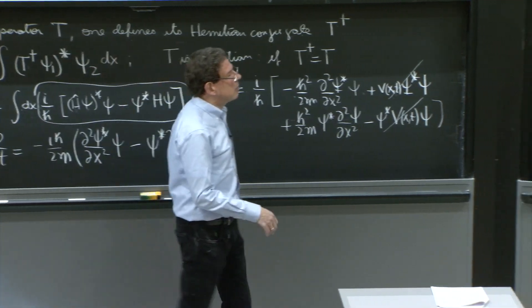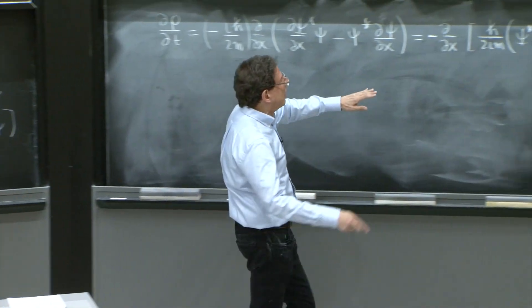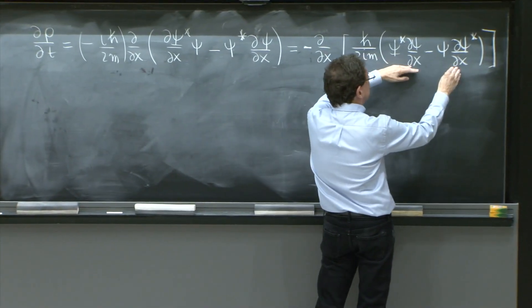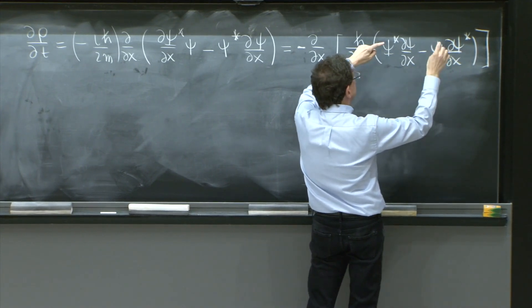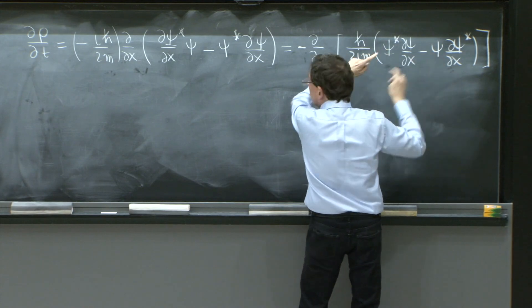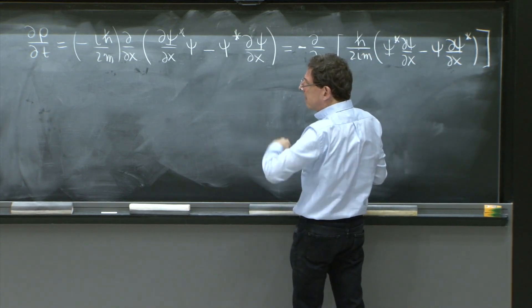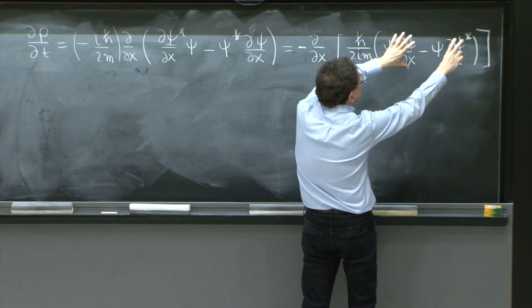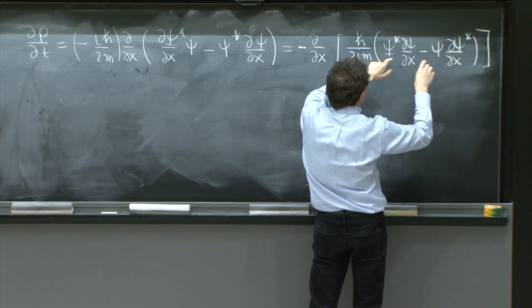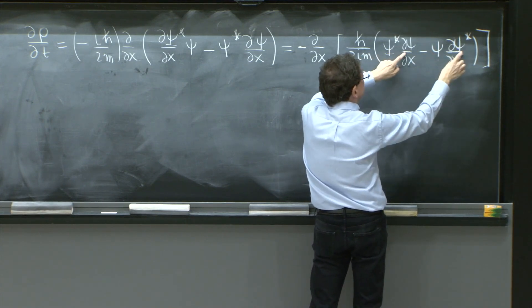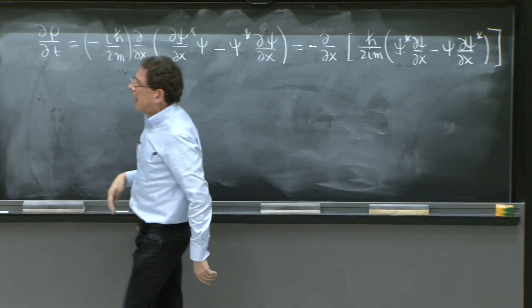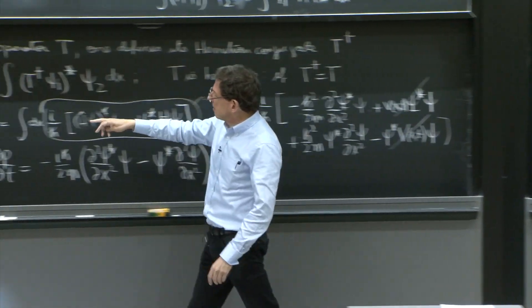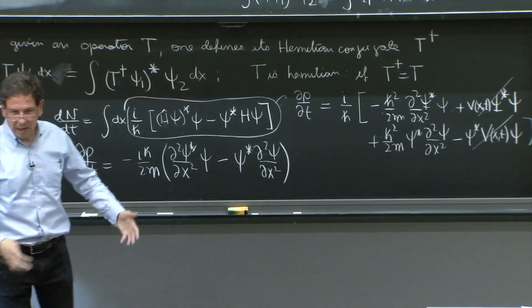So you just need to see what happens to these quantities as x goes to infinity. And as x goes to infinity, we said that psi must go to 0 from the beginning. And d psi/dx must not blow up. So if psi goes to 0 and d psi/dx doesn't blow up, this whole thing goes to 0. And dn/dt is equal to 0. And you're done.